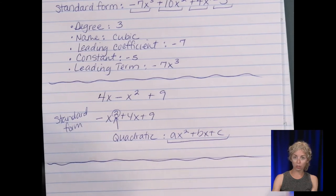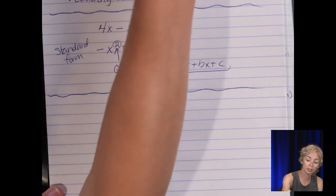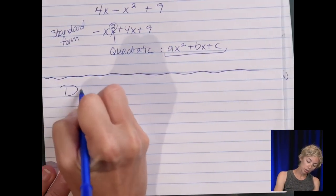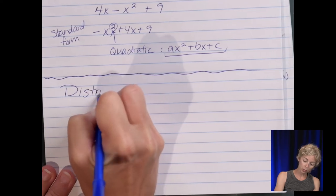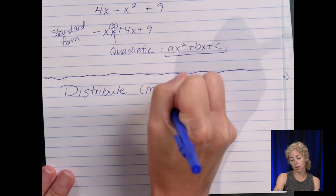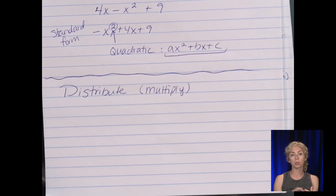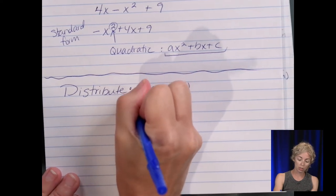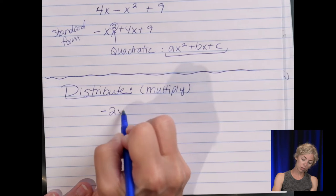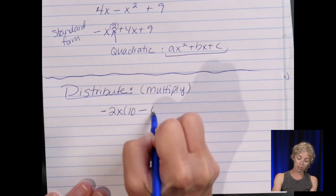All right. So we start the unit after all this vocab and formatting with the distributive property. So let's give an example. So our directions is going to be distribute. Or it could say multiply. Because remember, distributive property is multiplication over addition or subtraction.